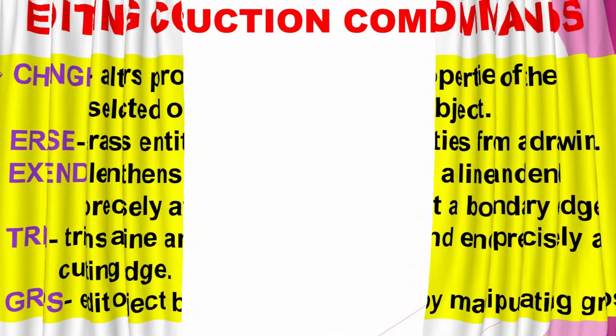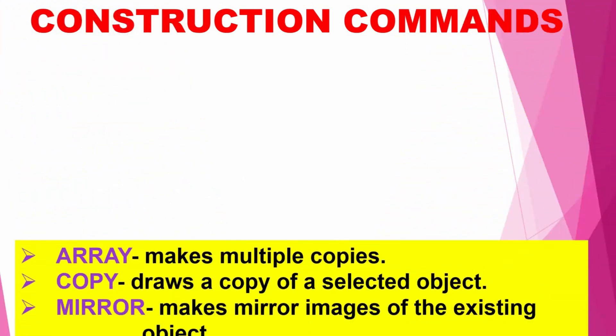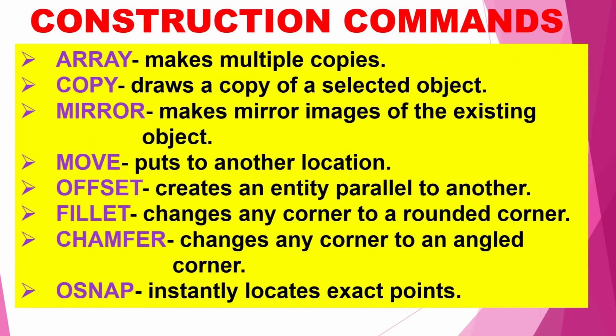We also have the construction commands. Construction commands are composed of: Array, which makes multiple copies of selected objects in a rectangular or circular pattern; Copy, which puts a copy of selected objects; Mirror, which makes mirror images of existing objects; Move, which puts designated entities to another location; and Offset, which constructs an entity parallel to another entity at a specified distance. Offset can be used with lines, circles, arcs, and polylines.